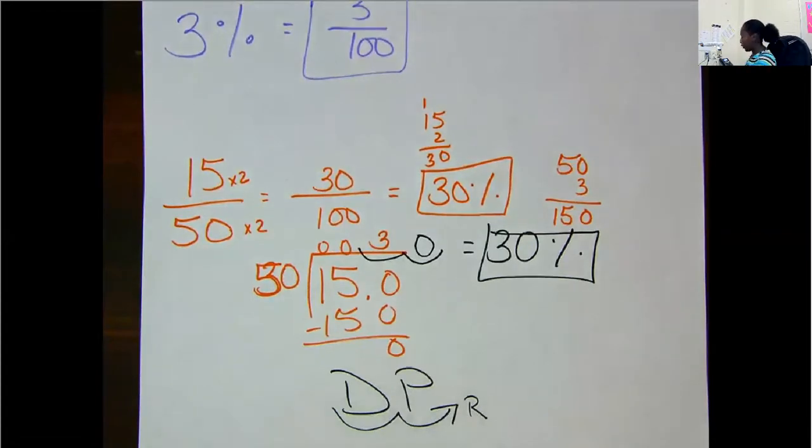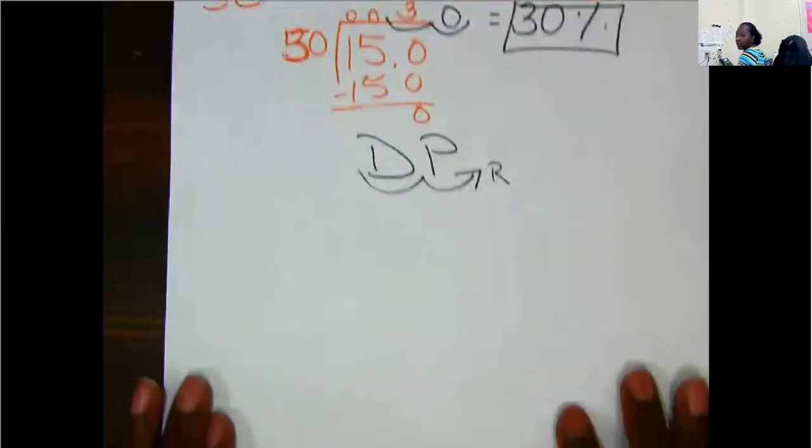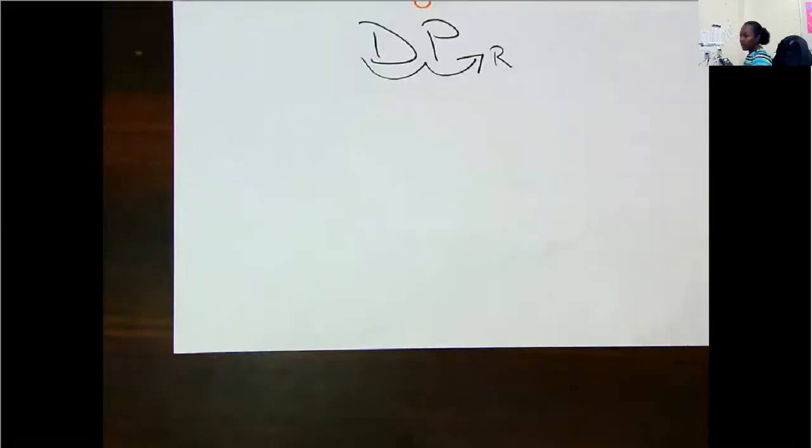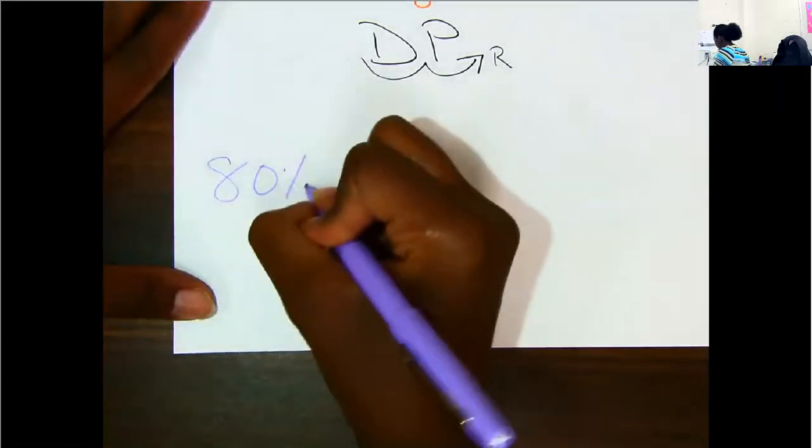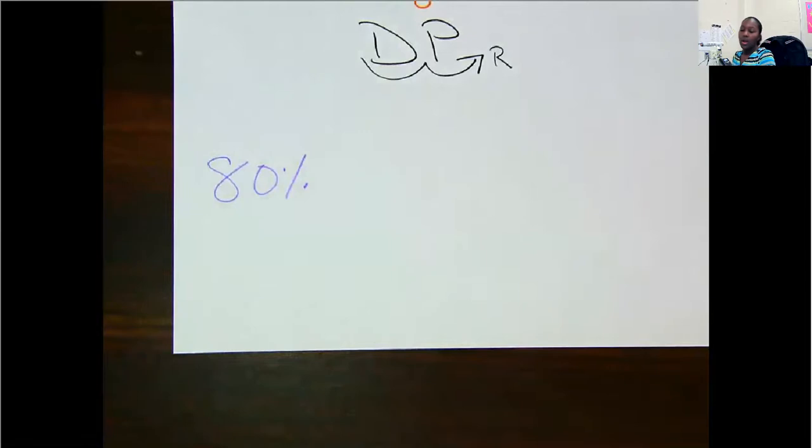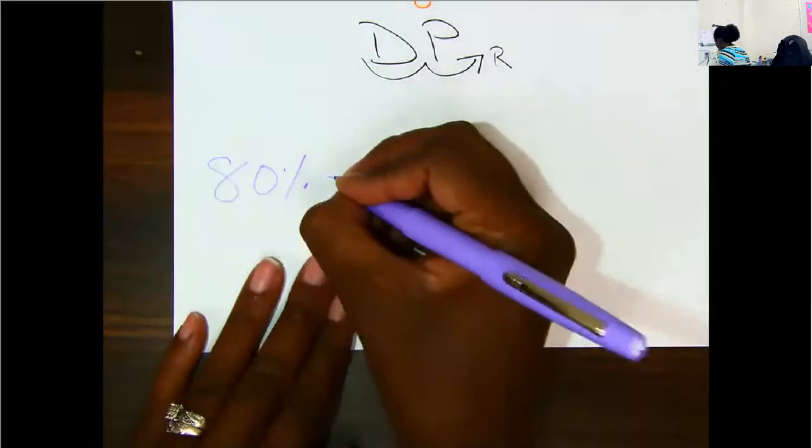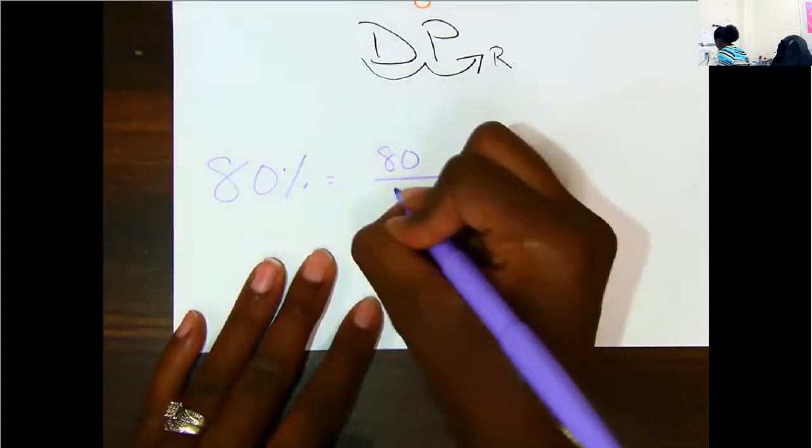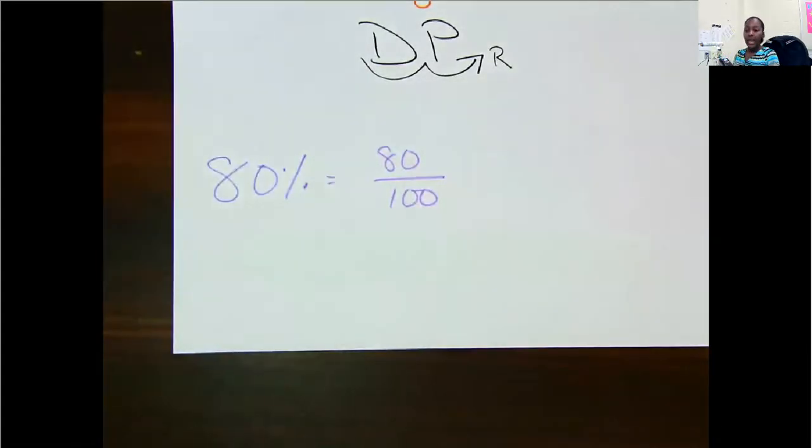You had two word problems on your quiz yesterday. One of them said, if I had a percent, what would it be as a fraction in simplest form? So I'm going to give you another percent. 80%. Okay. 80%. To change it to a fraction, you just put it over 100 and drop the percent sign. So 80 over 100. It is now a fraction.